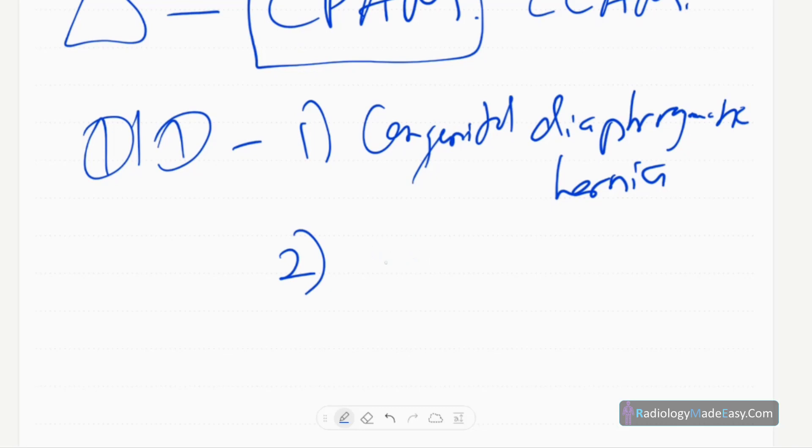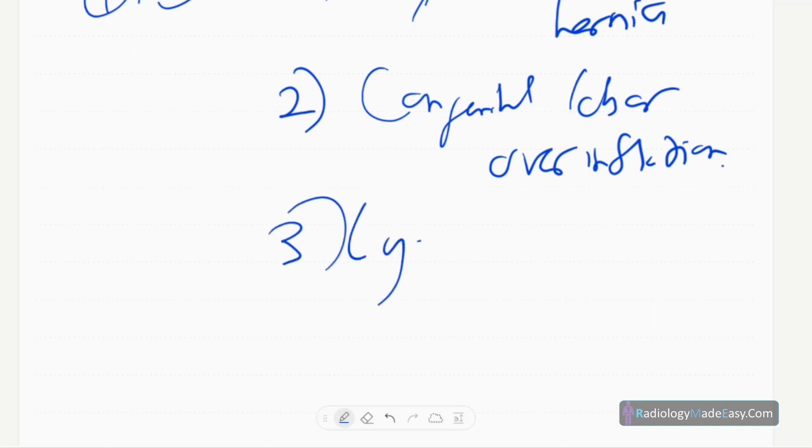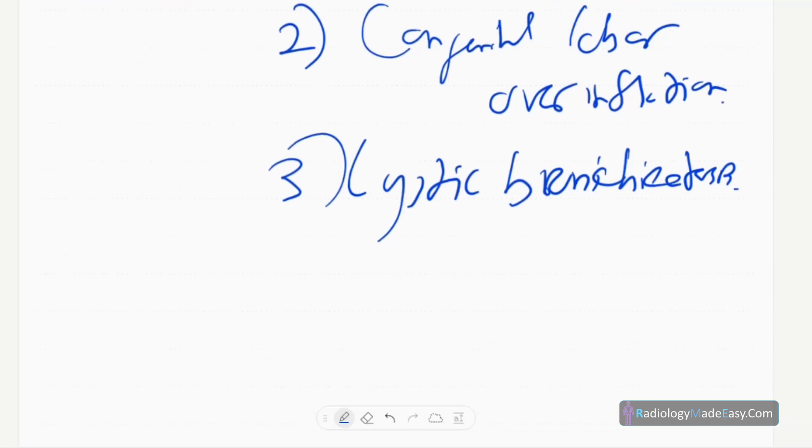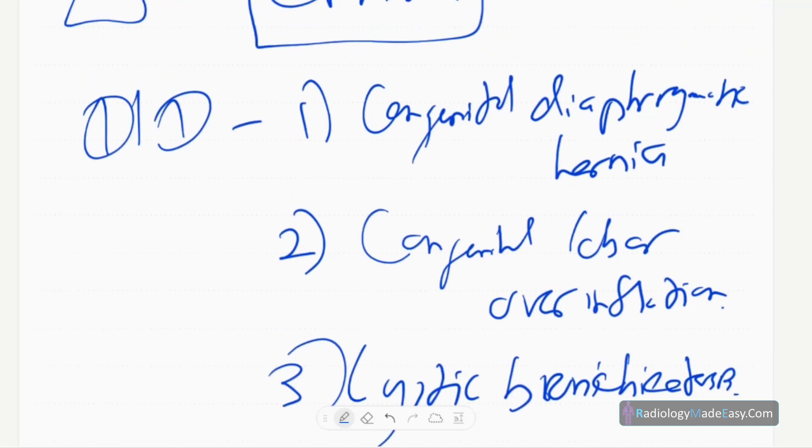Congenital lobar overinflation or emphysema is another differential diagnosis. And cystic bronchiectasis is also another differential diagnosis. If there are solid lesions, these are the differential diagnoses for lucent areas.